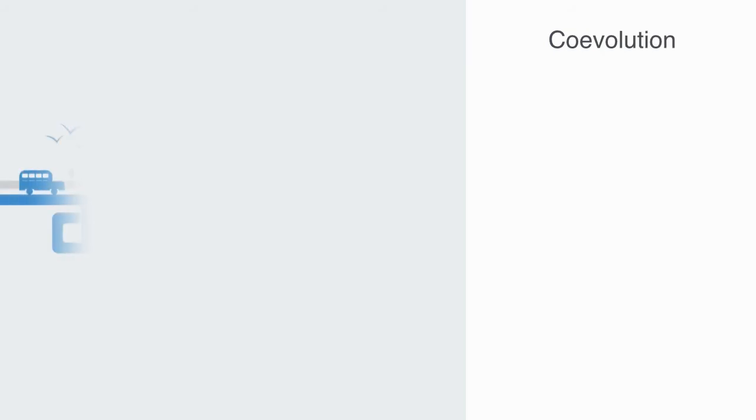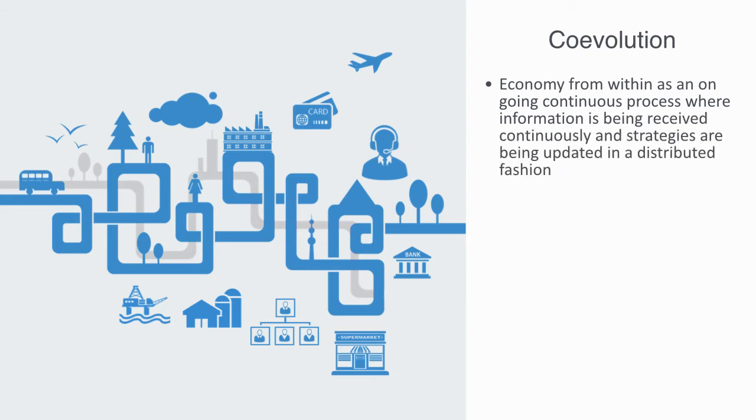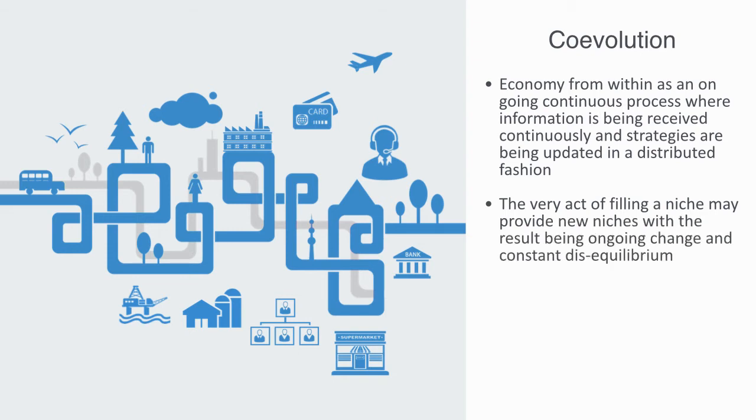The paradigm of economic evolution is focused on the non-equilibrium processes that transform the economy from within as an ongoing continuous process, where information is being received continuously and strategies are being updated in a distributed fashion all the time. During this process of change, we get co-evolution and novel niches emerge. These niches might be new markets, new technologies, new behaviors, or new institutions. The very act of fulfilling a niche may provide new niches with the result being ongoing change and constant disequilibrium.